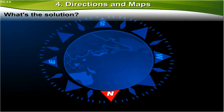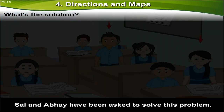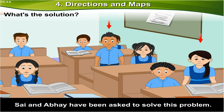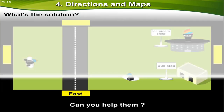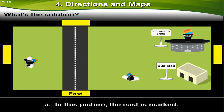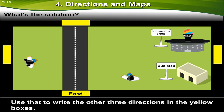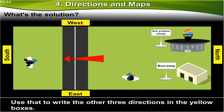What's the solution? Sai and Abhay have been asked to solve this problem. Can you help them? A. In this picture, the east is marked. Use that to write the other directions in the yellow boxes. On the opposite of east, we will have west. On the right-hand side, we will have north, while on the left-hand side of the east is south.